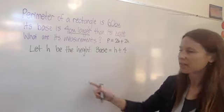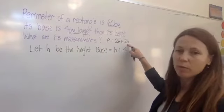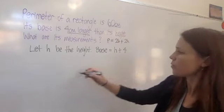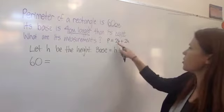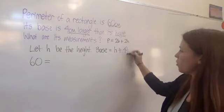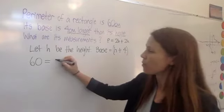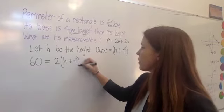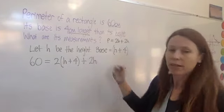Now I can substitute the height and the base into my formula. I can also substitute in the perimeter that I know. So, I'm going to start with the perimeter, 60 equals. Now, I need two lots of the base. That means I need two lots of all of this. So, thinking of that as being in brackets is going to help you to remember that you need two lots of all of that. And then I need two lots of the height, and that's easy because the height is just h.